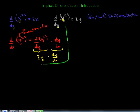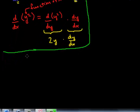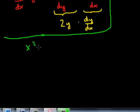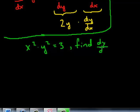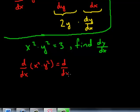Let's consider the expression x squared times y squared equals 3, and we want to find dy/dx. So we're going to take the derivative of both sides with respect to x. We apply the differentiation operator to both sides — the derivative of x squared times y squared on the left, and on the right, the derivative of 3 with respect to x. The derivative of 3 with respect to x is just 0. On the left-hand side, we're going to have a little bit more work to do.